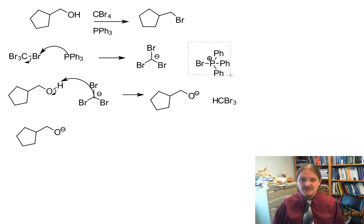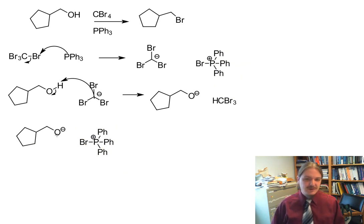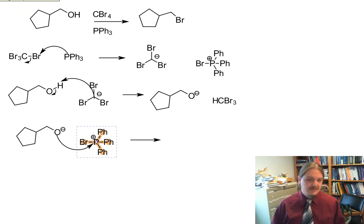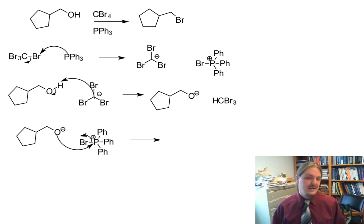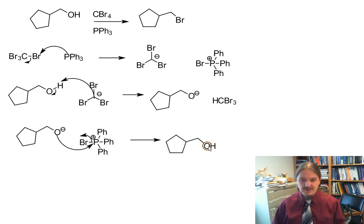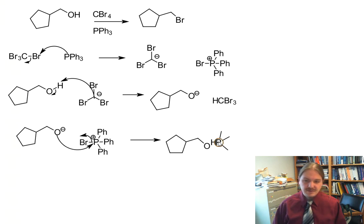Now I have an alkoxide anion, which we know are good nucleophiles. I have this triphenylphosphonium bromide cation, which is hanging out with a positive charge and maybe unhappy about it. These two things can get together — nucleophilic attack and loss of leaving group on the phosphorus-bromine side. Phosphorus still has a positive charge; it has four bonds instead of its preferred three, with the three phenyl groups.